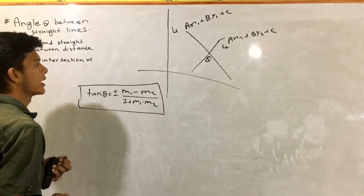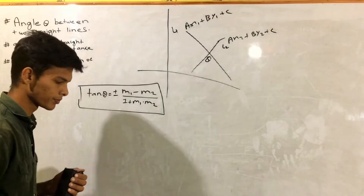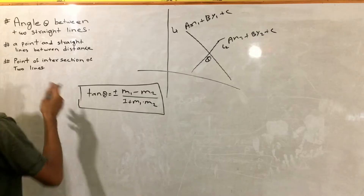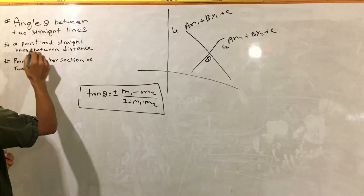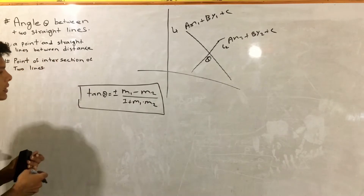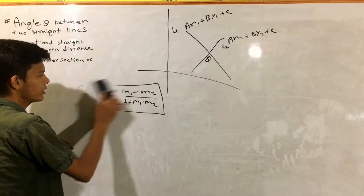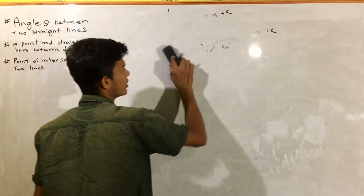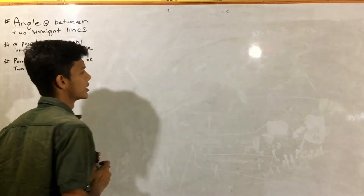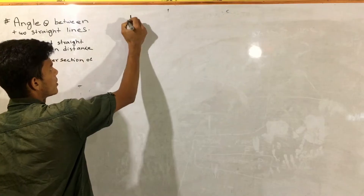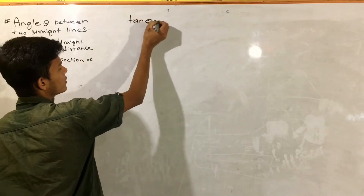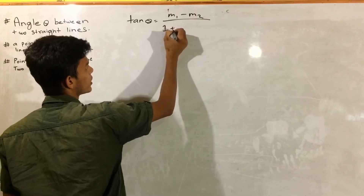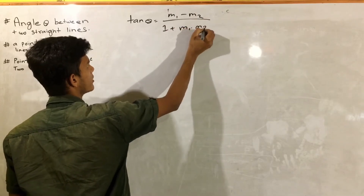This is the formula. So this is the angle of the angle. This angle is the angle between two straight lines. Do it up: point and straight line between distance. This is the point and straight line between distance.